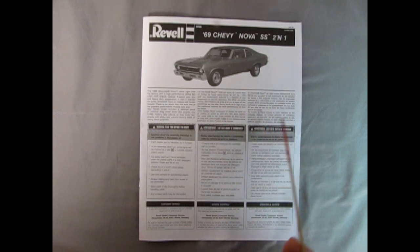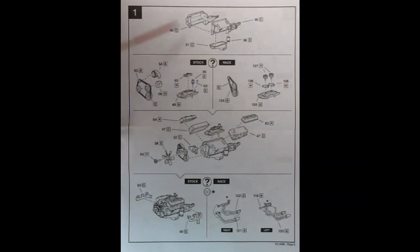Our first step of the build is getting the engine together. We have a right and left hand side engine block with the transmission, oil filter, and oil pan. Then down here we get our choice of either stock or racing. With the stock we get the factory belts and pulleys, the alternator and the power steering pump, the intake manifold, the coil to distributor and the carburetor.